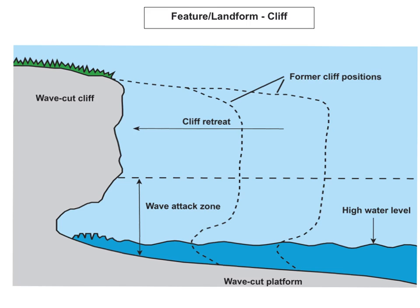We're going to look at how cliff erosion actually forms. A cliff is a steep side slope found along the coast, formed because of hydraulic action, air compression and abrasion. First, hydraulic action — the waves crash against the cliff. As they crash against the cliff, they find a line of weakness along the coast, and this line of weakness is eroded away forming a notch. This happens through the process of hydraulic action as the sheer force of the waves crashing against the cliff forms this notch. With continual erosion and undercutting, the notch gets bigger and bigger.